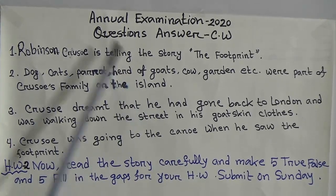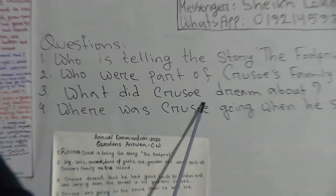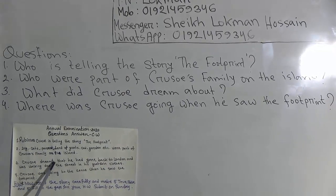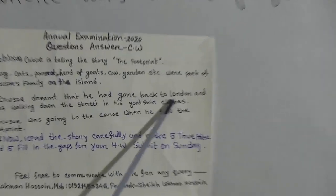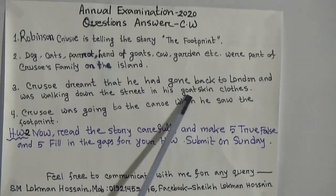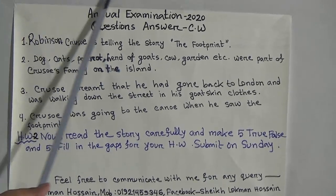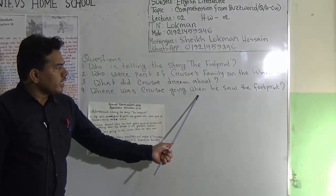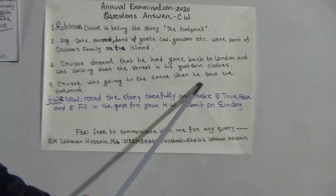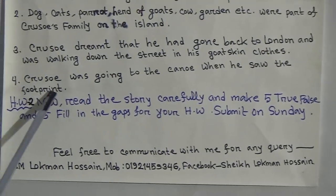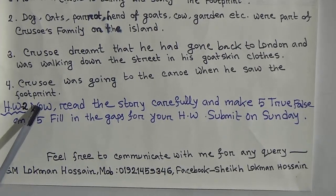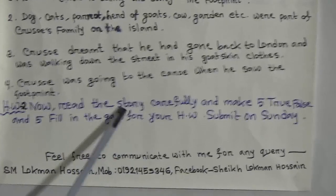Question three: What did Crusoe dream about? According to the passage, Crusoe dreamed that he had gone back to London and was walking down the street in his goatskin clothes. Question four: Where was Crusoe going when he saw the footprint? Crusoe was going to the canal when he saw the footprint.